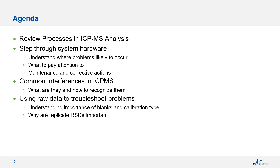The next section will look at common interferences in ICP-MS — what they are and how to recognize them. In the final section, we'll discuss how to use raw data to troubleshoot your analytical problems, specifically understanding the importance of your blanks and your calibration type, and why looking at replicate RSDs is important.